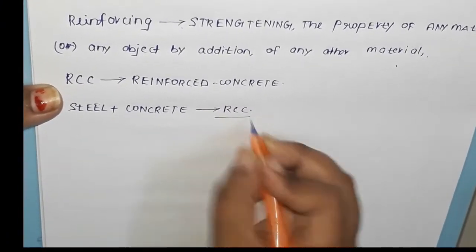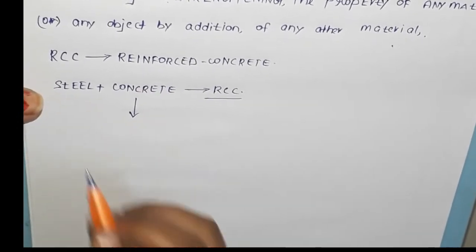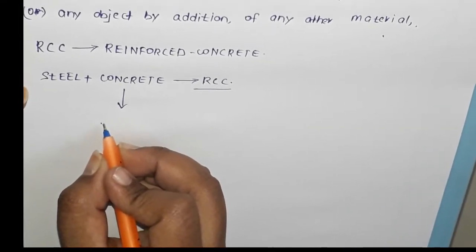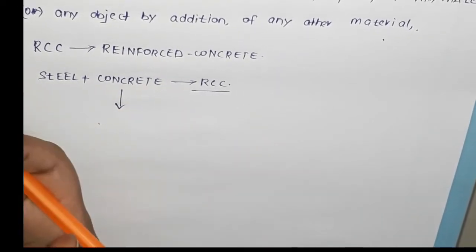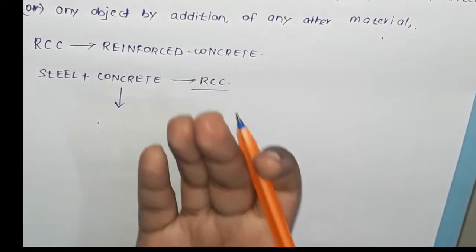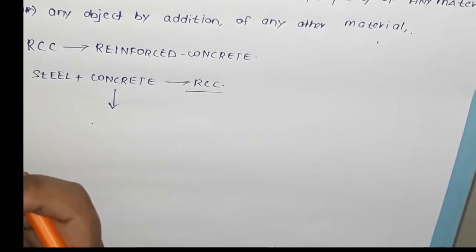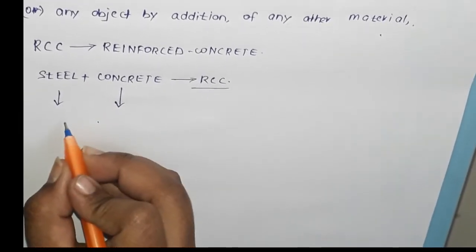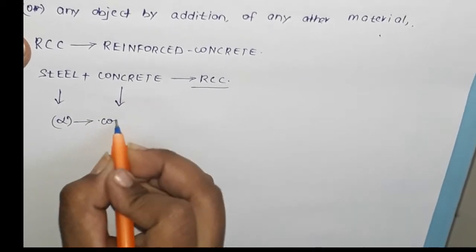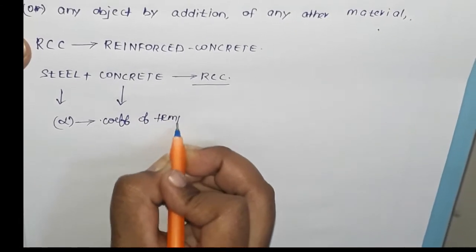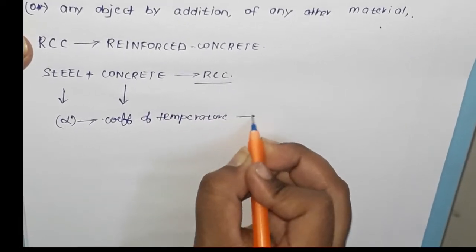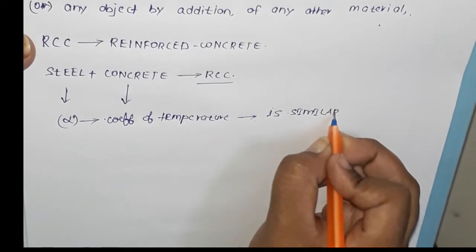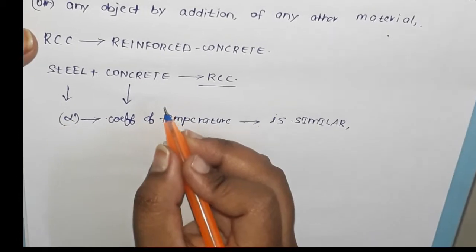So steel plus concrete is nothing but RCC. As for why we induce only steel: concrete is weak in tension, so we have to increase the tensile strength of concrete by the addition of another material. Instead of steel we could use other materials like wood or timber or even gold, but why only steel? Because the coefficient of thermal expansion — alpha — is similar for both concrete and steel, and for that reason we use steel within concrete.